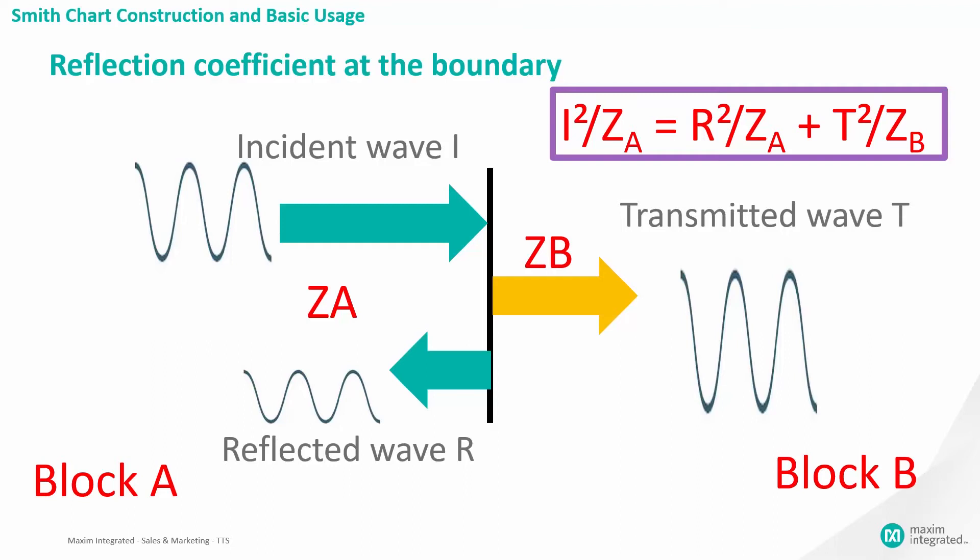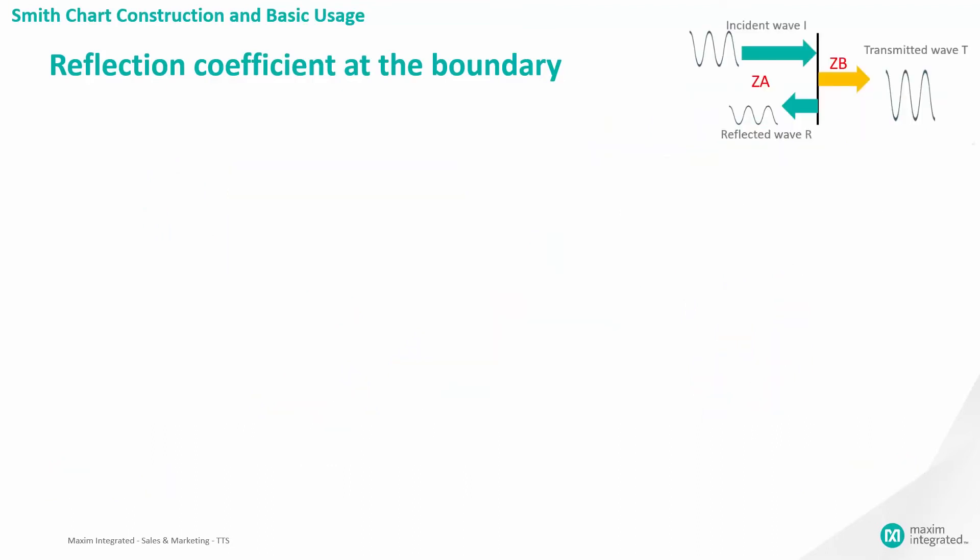With these two equations, we can compute the relationship between the reflection R and the impedances ZA and ZB. As we mentioned in the last slide, physical laws require that the amplitude of the waves from the two zones A and B must be balanced. Therefore, T must equal I plus R.